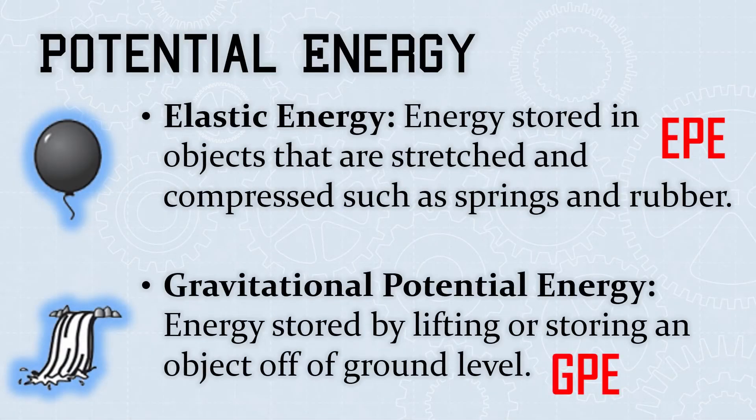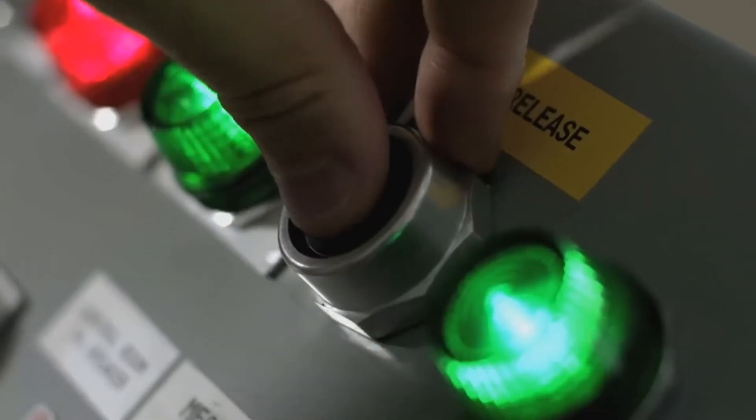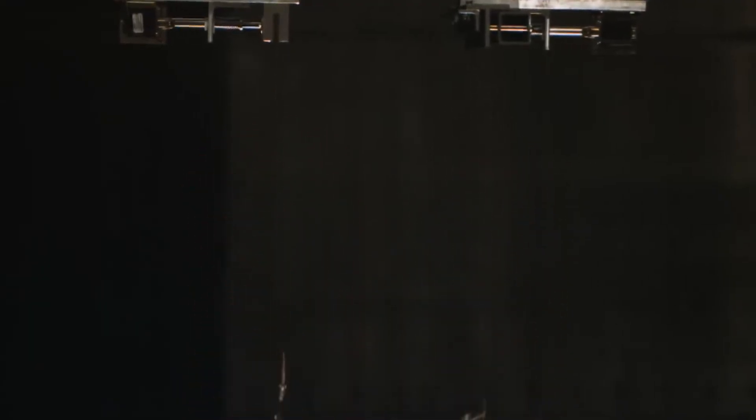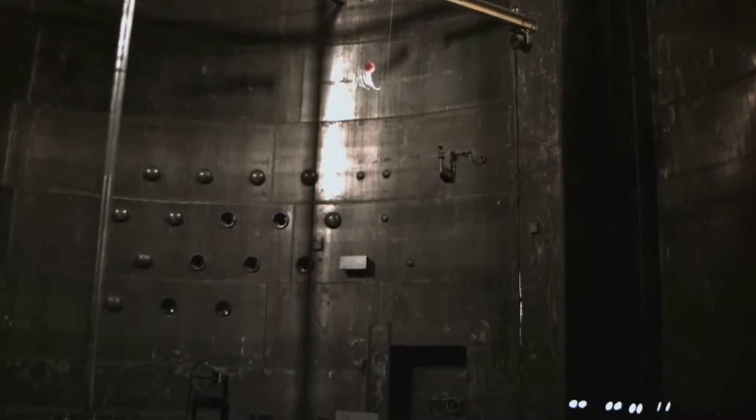A bouncy ball is dropped from a height, so gravitational potential energy plays a factor. This is energy stored by lifting or storing an object off of ground level. The total amount of gravitational potential energy is determined by the height of the object off the ground, the mass of the object, and certain characteristics of gravity here on Earth.